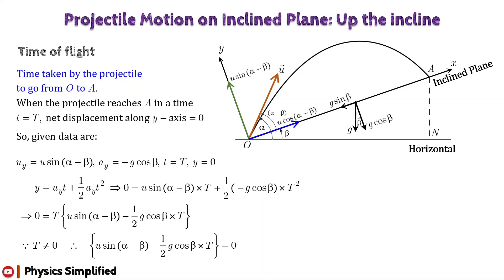Therefore, the time of flight of a projectile up the incline is given by: T = 2u sin(α−β) / (g cos β).